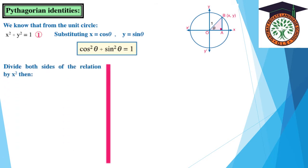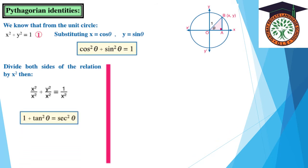Divide both sides of the relation by x²: x²/x² + y²/x² = 1/x². This gives 1 + tan²z = sec²z.